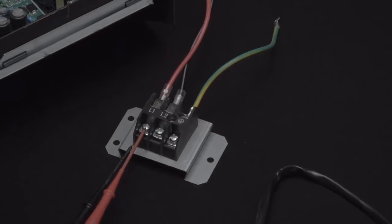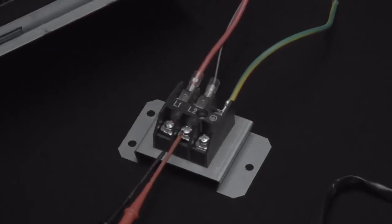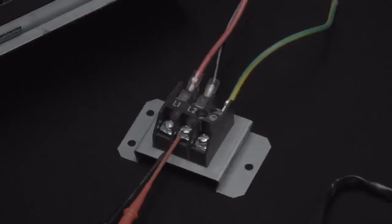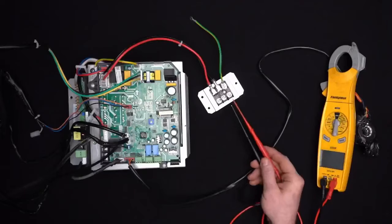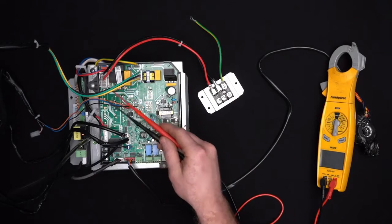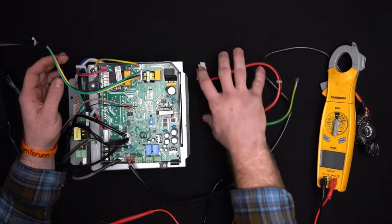If you measure this L1 to ground, you should get between, depending on if you have 208 or 240, you should get your line 1 voltage, and then between L2 and ground, you should get your line voltage between L2 and ground. That goes to the board to our connector here with the red and black. We're going to go ahead and remove this and get this out of the way.